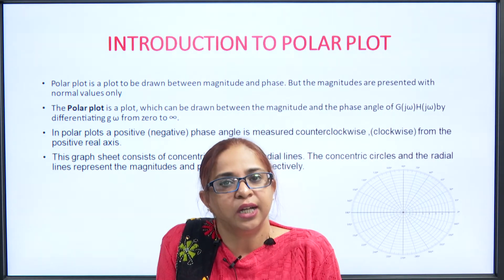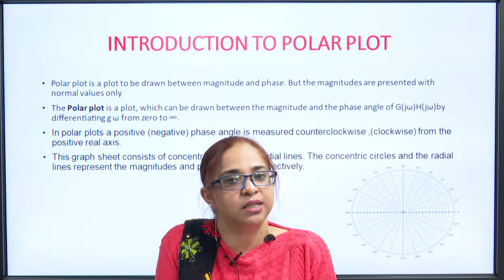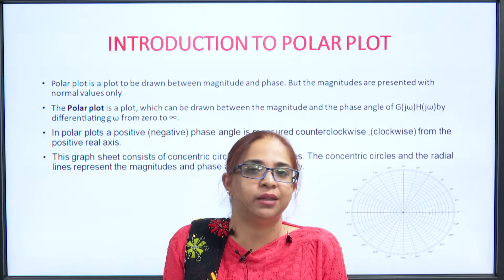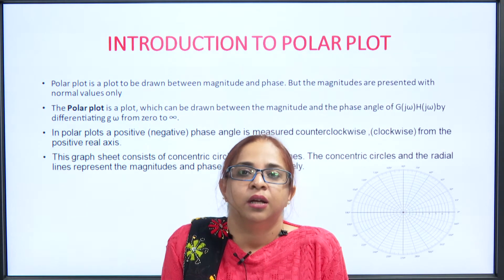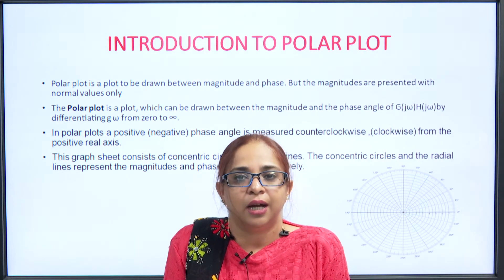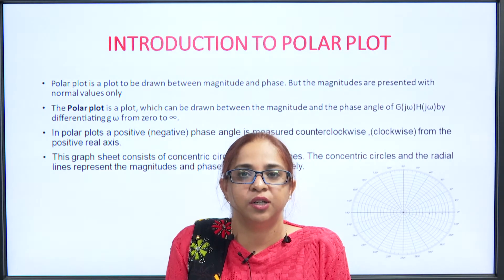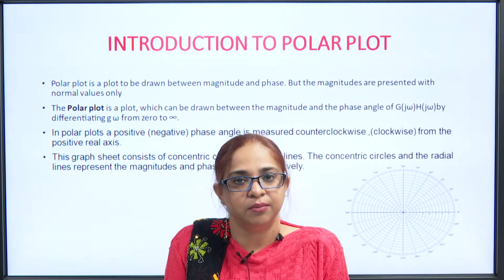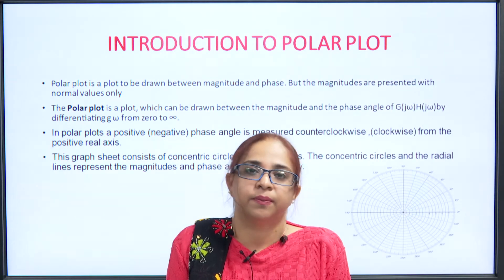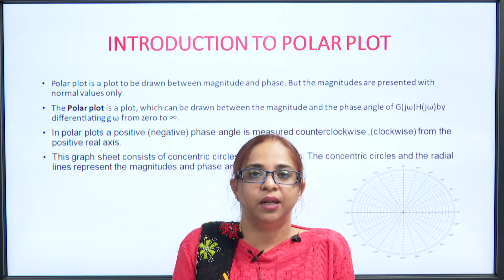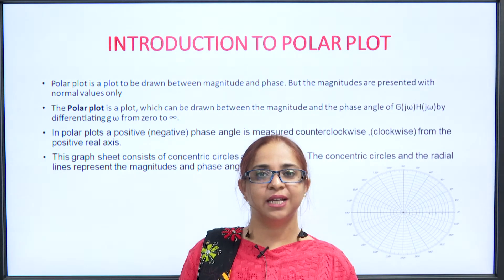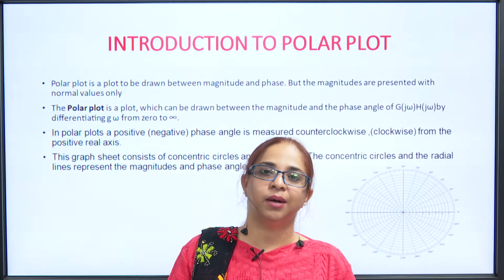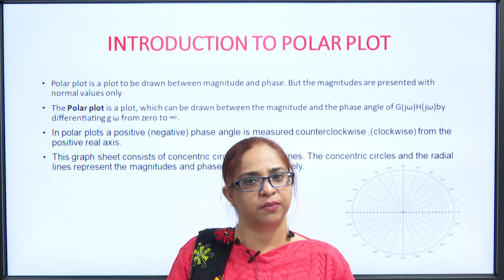Lastly, we only touched on the terms called gain margin and phase margin. What was gain margin? Gain margin was the additional amount of magnitude beyond which the system will reach instability. That means it is 1 upon the magnitude of the system at a frequency called the phase crossover frequency. When the phase angle becomes minus 180 degrees, that frequency is called the phase crossover frequency. At that frequency, if we determine the magnitude and take 1 upon magnitude, that term is called the gain margin.